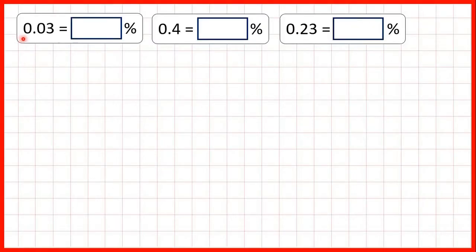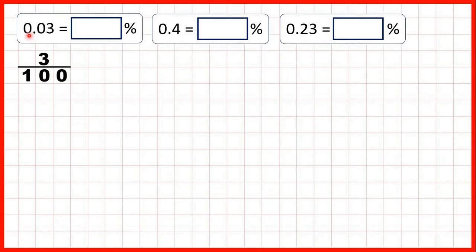We need to change these decimals to percentages. First we have 0.03. Remember the second digit after the decimal point is the hundredths digit, and a percentage is a fraction over 100. So because 0.03 means that we have three hundredths, as a percentage we write that as three percent.